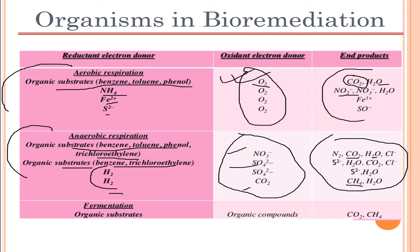Fermentation is basically an anaerobic process, but it can also be carried out in aerobic processes depending on the bioreactor. Different sorts of bioreactors carry out fermentation, and the process can be aerobic or anaerobic, though in most cases it is anaerobic. The end products of fermentation are carbon dioxide and methane.